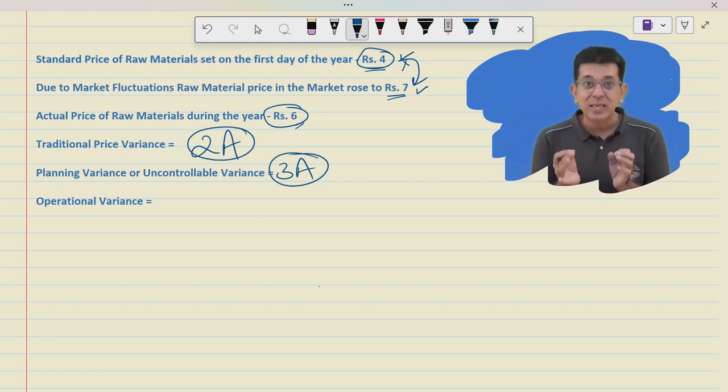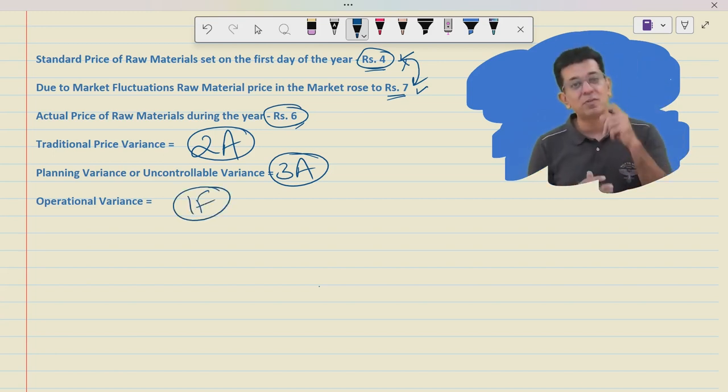But then the part that purchase manager is responsible. He should have purchased the raw materials at what price? 7 rupees not 4. He purchased it at what price? 6 rupees. So therefore he has done a fantastic job and saved 1 rupee for the company. So therefore this will be 1 favorable.